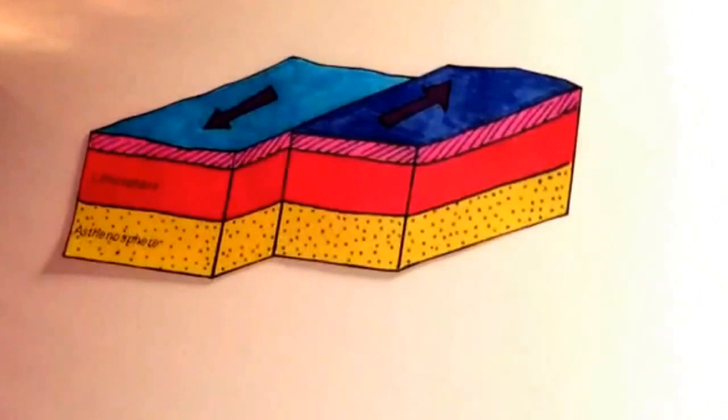Lastly, we will be talking about transform boundaries. At a transform boundary, two plates slide past one another. Most of these boundaries are located on the ocean floor and they help offset the movement of seafloor spreading.